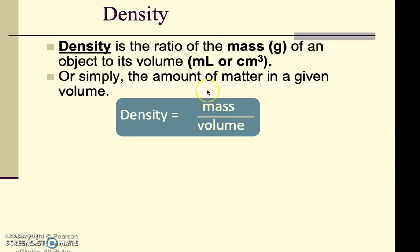So here's the formula. Density equals mass over volume. Once again, solids are grams per centimeters cubed and liquids are grams per mL.